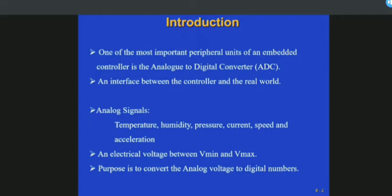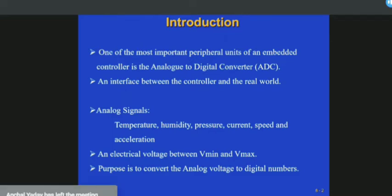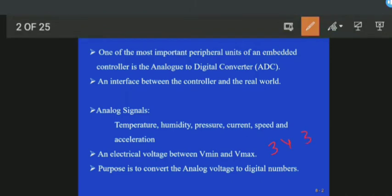For an ADC - Analog to Digital Converter - it has an analog electrical voltage range between V minimum and V maximum. It allows input voltage between V minimum and V maximum. Generally, the ADC we use allows a voltage range between zero volts as V minimum and three to 3.3 volts as V maximum. So the range should be between zero to 3.3 volts depending upon your analog to digital converter.